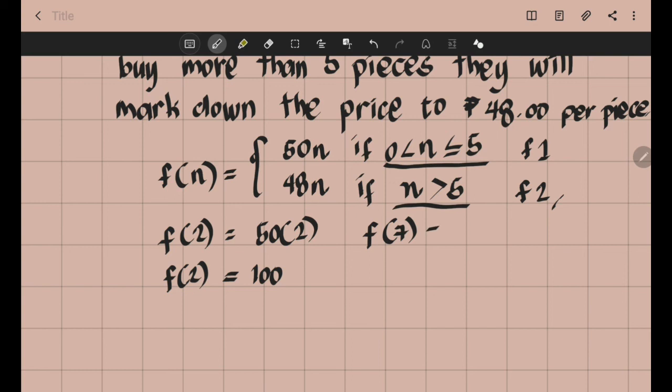We will use f of 7 equals 48 multiplied by 7 pieces of chocolate bars. That is equal to 336. So f of 7 is 336.